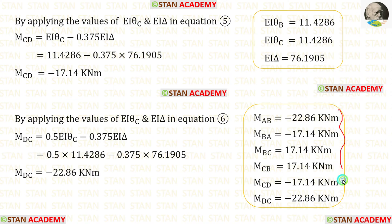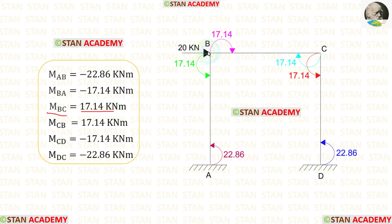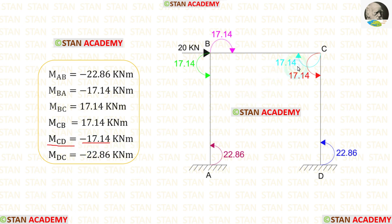In this analysis we have calculated all of the moments. Let us see the direction of each moment. MAB is negative — acting anticlockwise. MBA is negative — also acting anticlockwise. MBC is positive — acting clockwise. MCB is positive — also acting clockwise. MCD is negative — acting anticlockwise. MDC is negative — also acting anticlockwise.